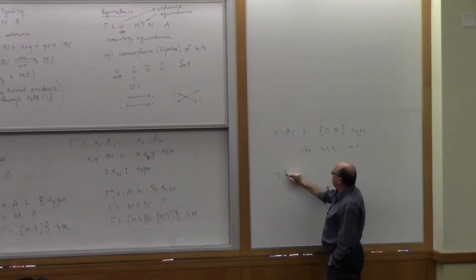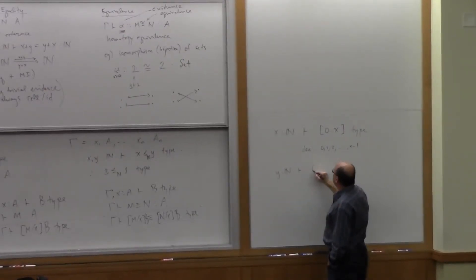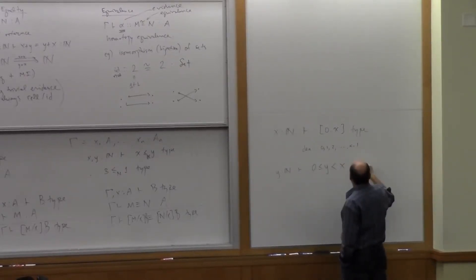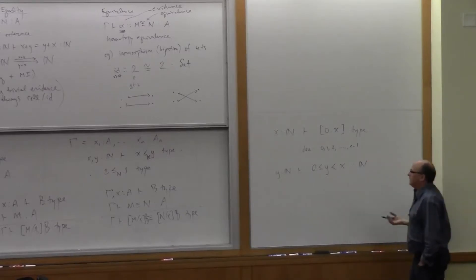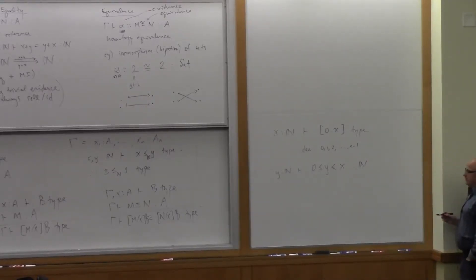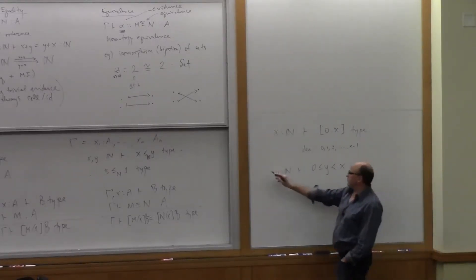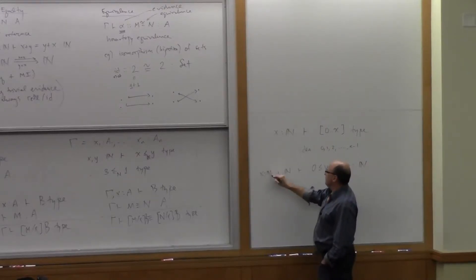You can think of this as a predicate in Y that says, well, given Y in N, it's the idea that Y lies between zero and X, let's say, if I did it like that in N. That's equivalently what it's expressing. And this is for some fixed X.